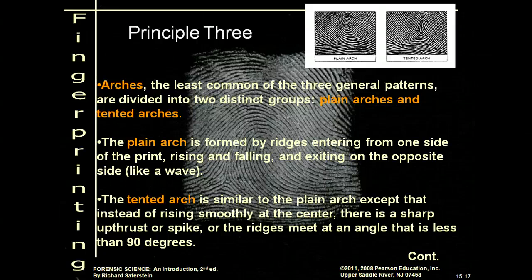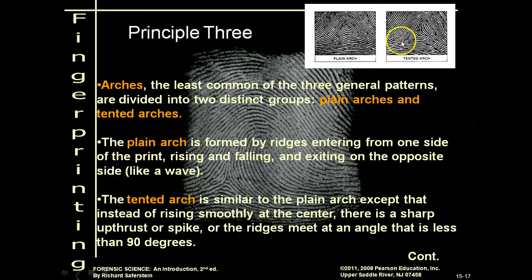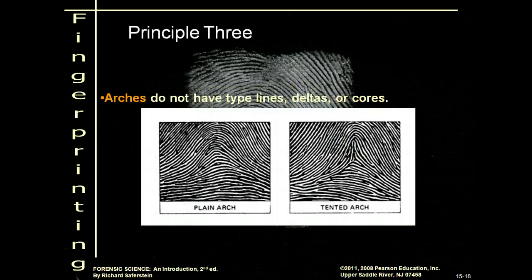Arches are pretty easy. They start on the left-hand side and end on the right-hand side. There are two types: the plain arch, which just looks like a hill, and the tented arch, where you have a triangle tent underneath the arch — it's a lot sharper. Arches don't have type lines, they don't have deltas, and they don't have cores. Cores are actually the middle of the whorl, but arches don't have anything like that.